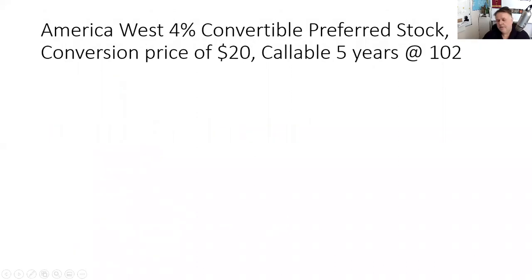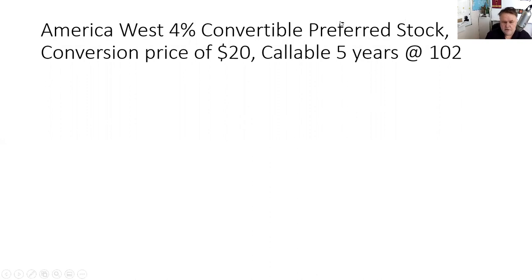Here's an example of a convertible preferred stock — America West, paying 4%. Four percent is based on par, so that's $4 annually, $1 every quarter. That's a 4% convertible preferred, which pays more than the common. Typically convertibles pay more than common. The convertible bond pays less than straight debt. I recently saw an issuer that had issued both straight debt and convertible debt at the same time — there was a 300 basis points difference: straight debt at 8%, convertible debt at 5%.